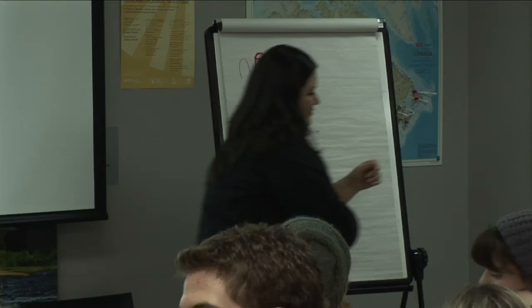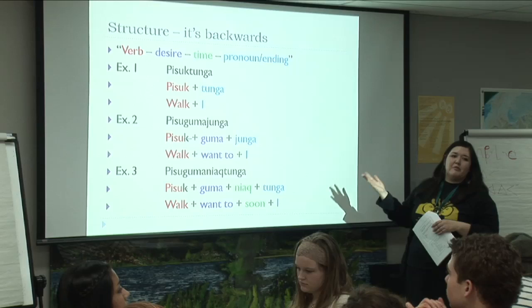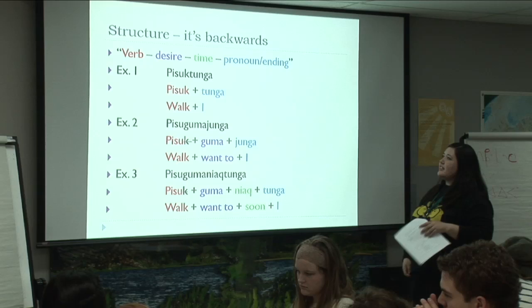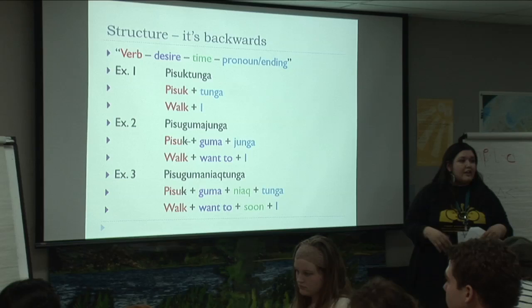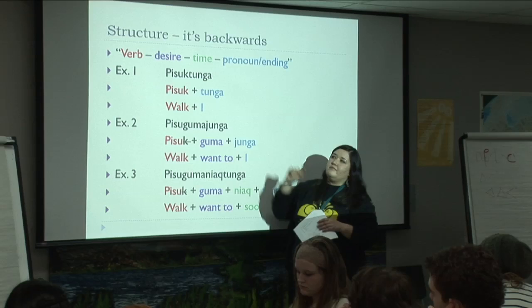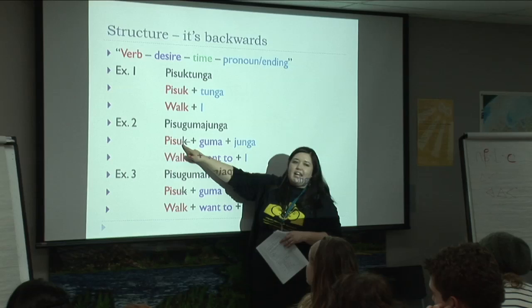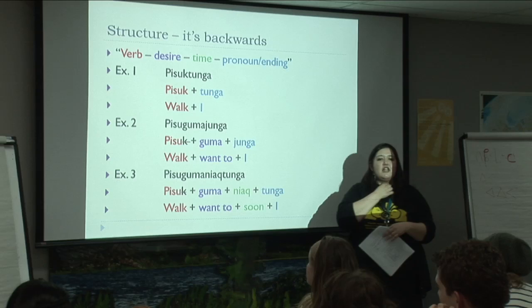The structure of Inuktitut: when you form a word, you might capture almost an entire sentence in one word, and it's backwards. We have the verb, then what you want to do — if you have it, don't have it, can do it, can't do it — then time, past or future, and then who's talking. The verb pisuk means walk. Tunga is the pronoun for I. So I walk is pisuktunga. If we want to say I want to walk, we add the infix guma. We drop the K because pisukguma flows better. So I want to walk becomes pisukgumayunga.